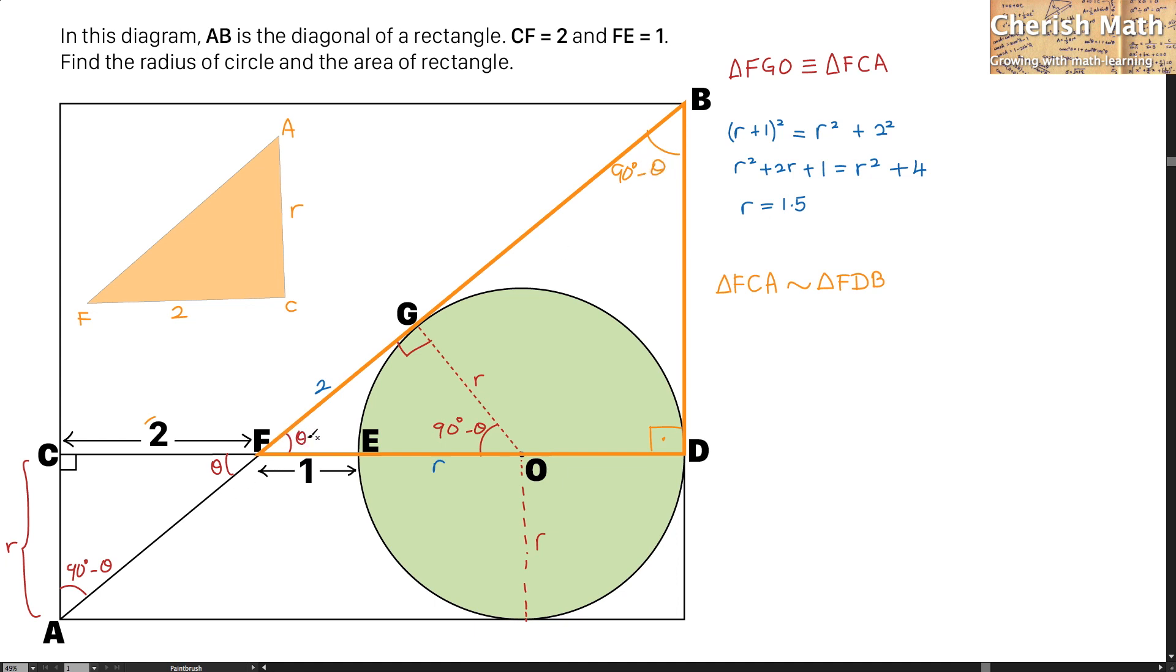This is theta over here and for these two triangles FCA and FDB each part of the angle is the same. So this is the proof of the similarity.